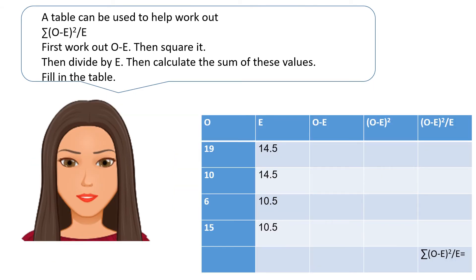The table can be used to help work out the overall chi-squared, which is the sum of observed value minus expected values, squared, divided by expected value. So first work out observed value minus expected value (O minus E), then square it, then divide by E, then calculate the sum of these values.